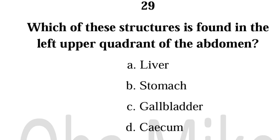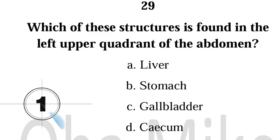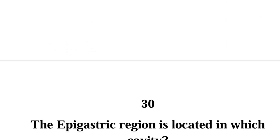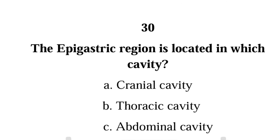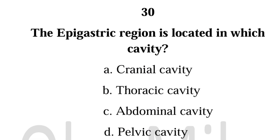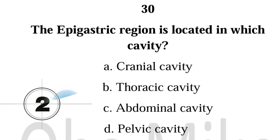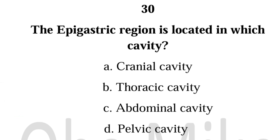Number 29. Which of these structures is found in the left upper quadrant of the abdomen? Number 30. The epigastric region is located in which cavity? Abdominal cavity.